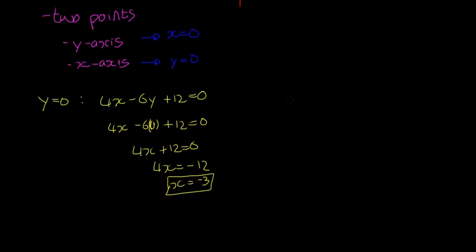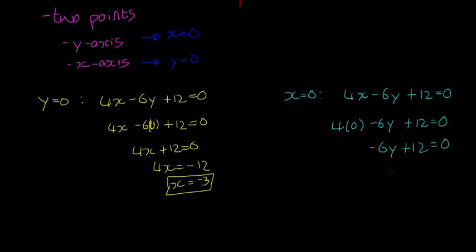Here I'm going to say x is equal to 0. So we're going to have 4x minus 6y plus 12 is equal to 0. And x is equal to 0. So it's going to be 4 multiplied by 0 minus 6y plus 12 is equal to 0. So minus 6y plus 12 is equal to 0, minus 6y is equal to minus 12. And y is equal to 2 in this case.